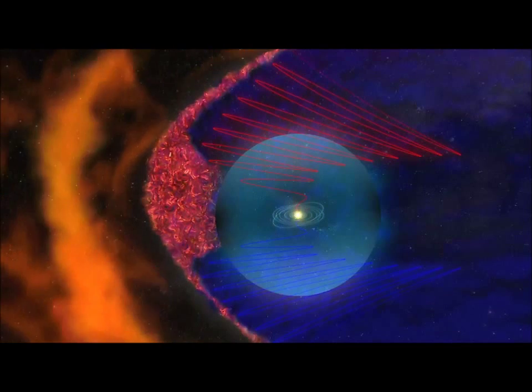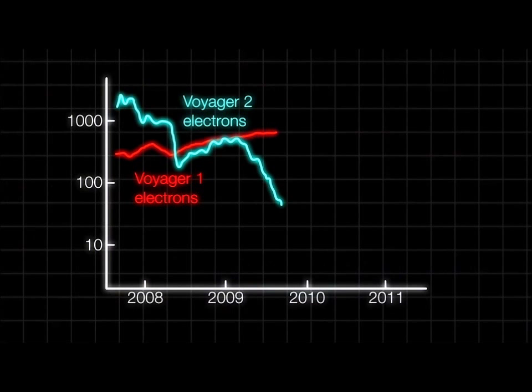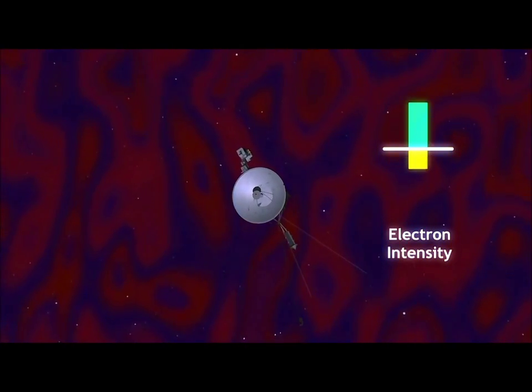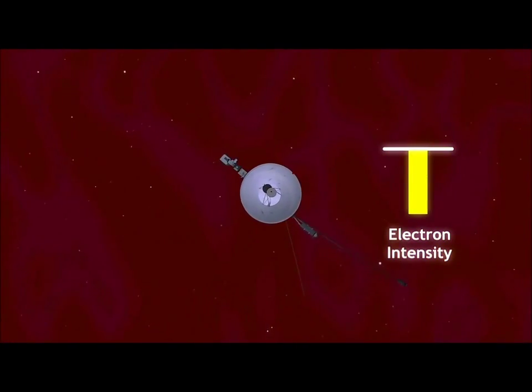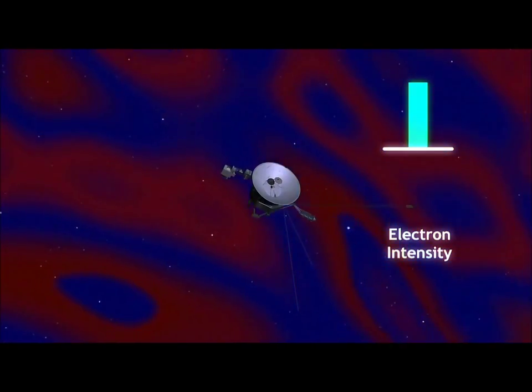The nature of the bubble region explains why Voyager 2 has been seeing variations in the number of energetic particles compared to Voyager 1. Because of its path, Voyager 2 has been passing in and out of the bubble region. When it is in the region, Voyager 2 sees many trapped cosmic rays and electrons. When it is out of the region, the spacecraft sees fewer.